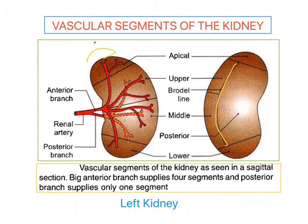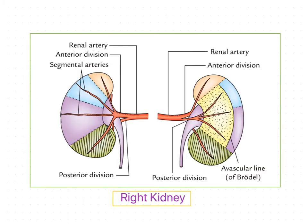These are all the vascular segments seen on the left kidney. The same segments can also be seen on the right side. Here you can see the right kidney anterior aspect and the right kidney posterior aspect. The renal artery is a direct branch of the abdominal aorta — normally at the L2 level — and it divides into the anterior branch, which moves in front of the renal pelvis, and the posterior branch, which passes behind the renal pelvis.